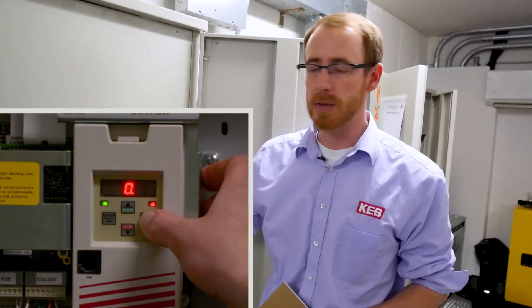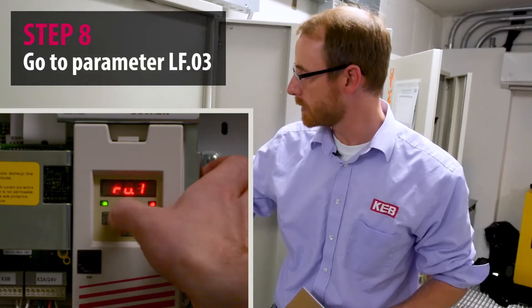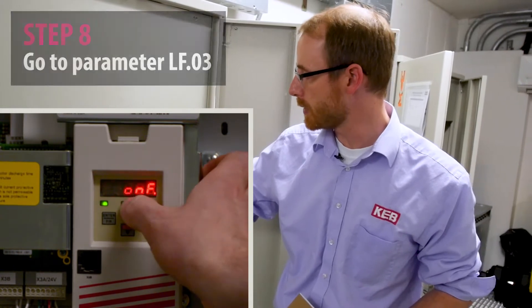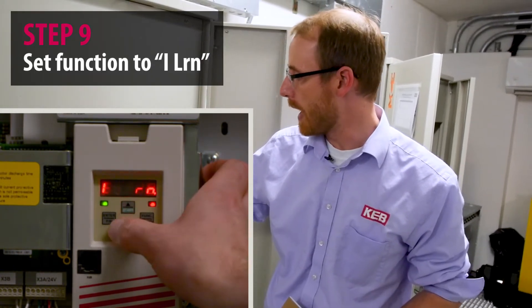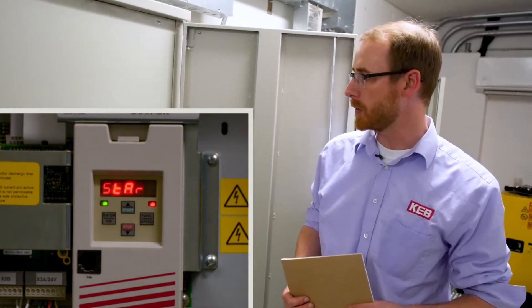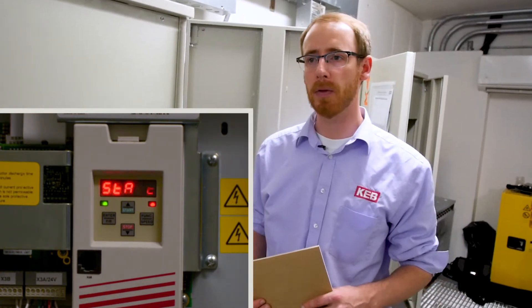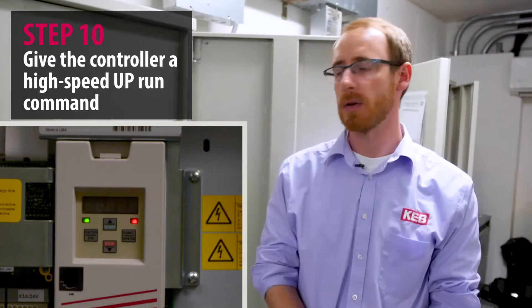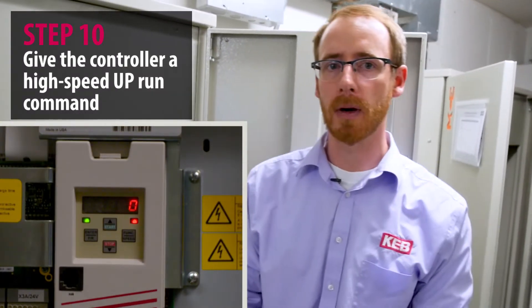Next, we'll go to parameter LF3 to initiate the inertial learn. So we'll set that to iLearn, press enter, it'll display start. From there, we'll give high speed runs in both the up and down direction. So now we're going to give the car an up run for a high speed up run.